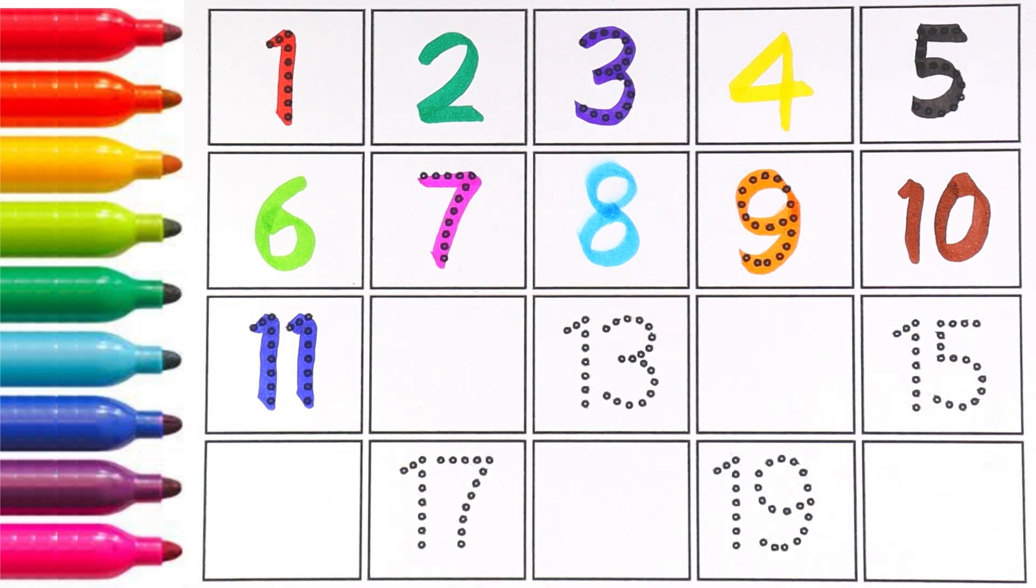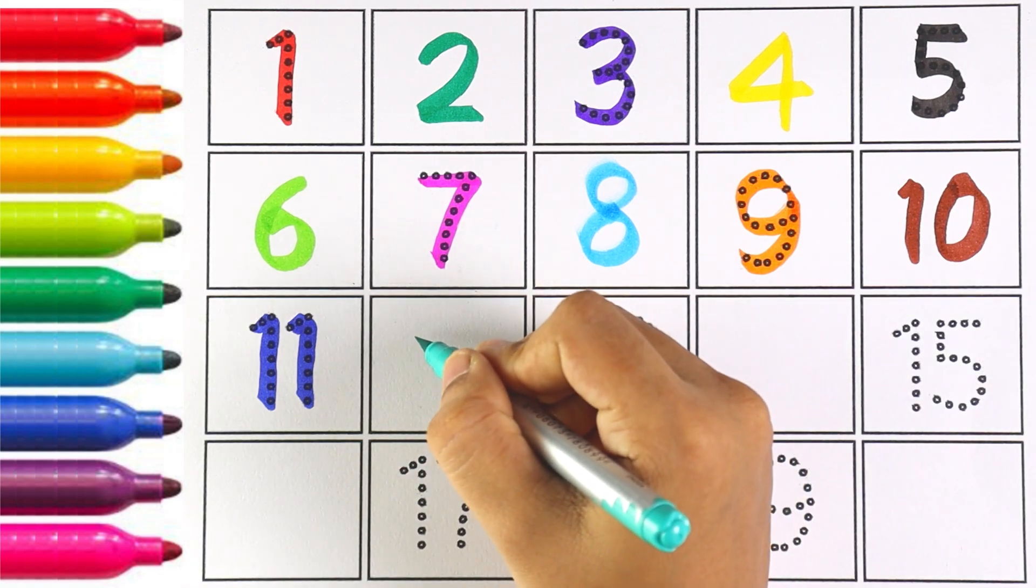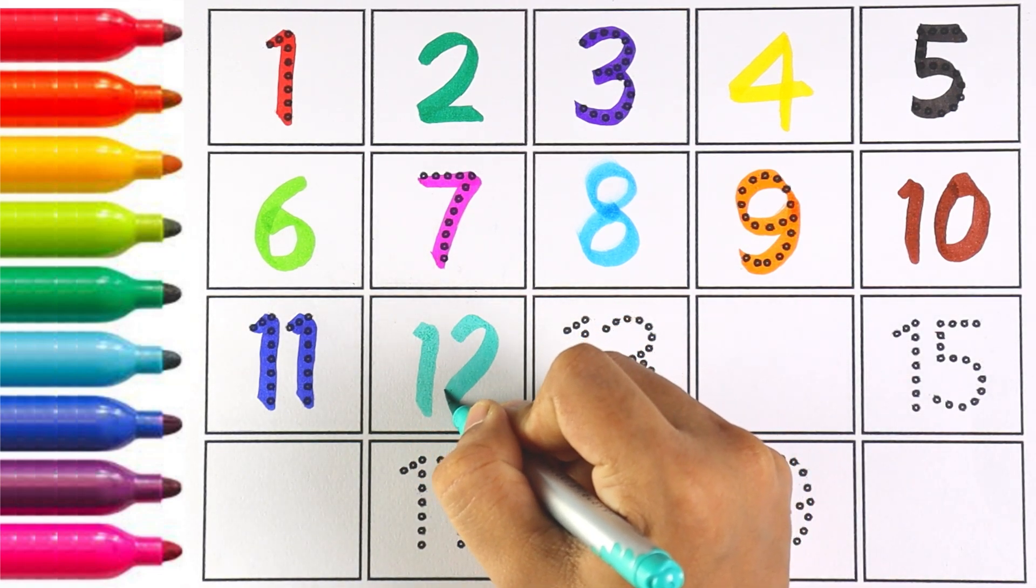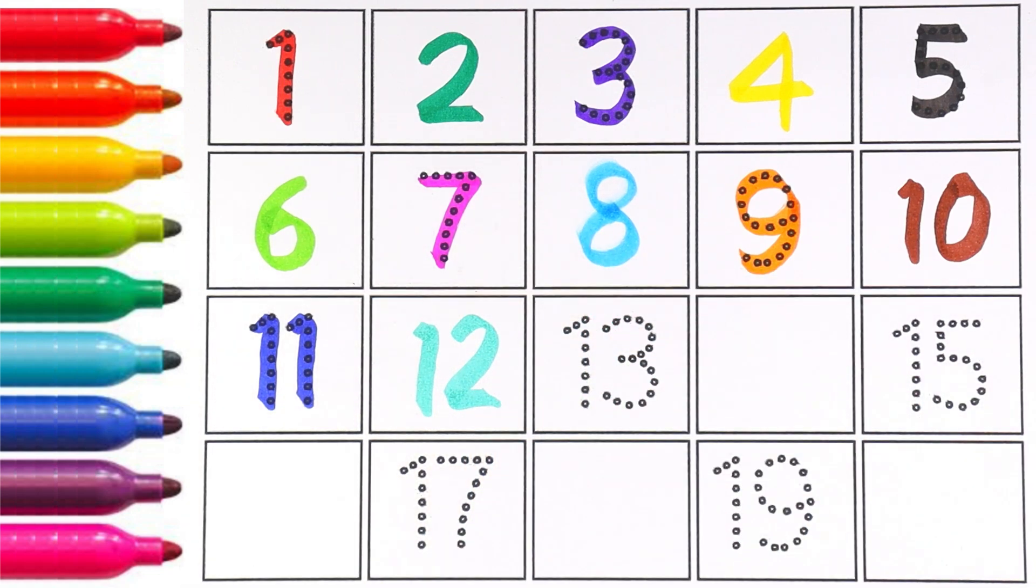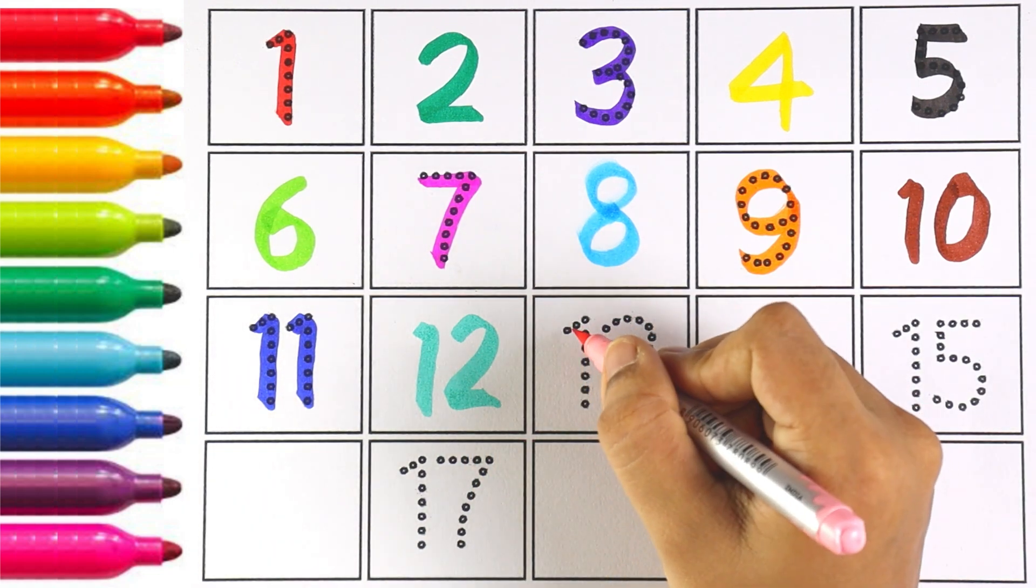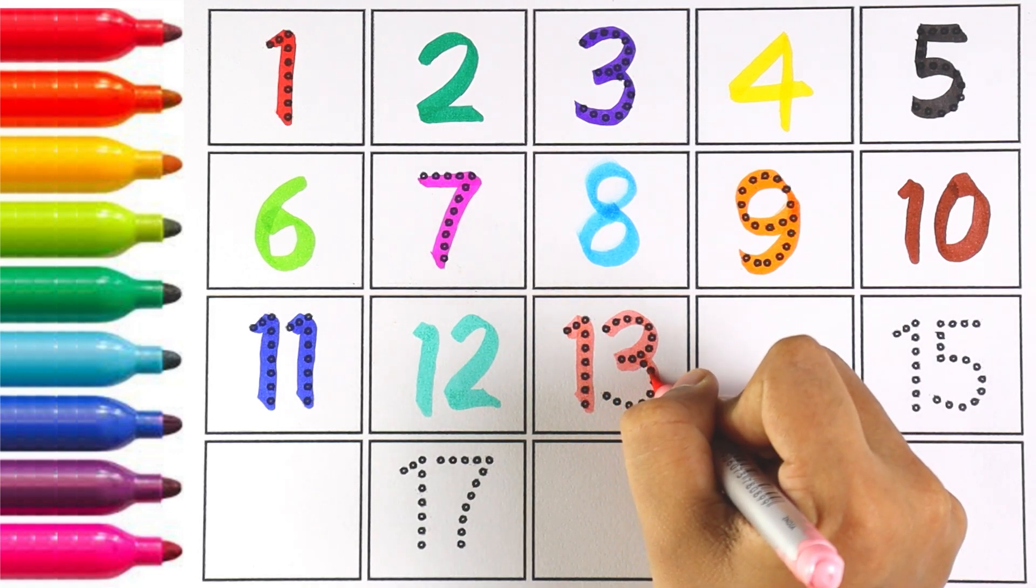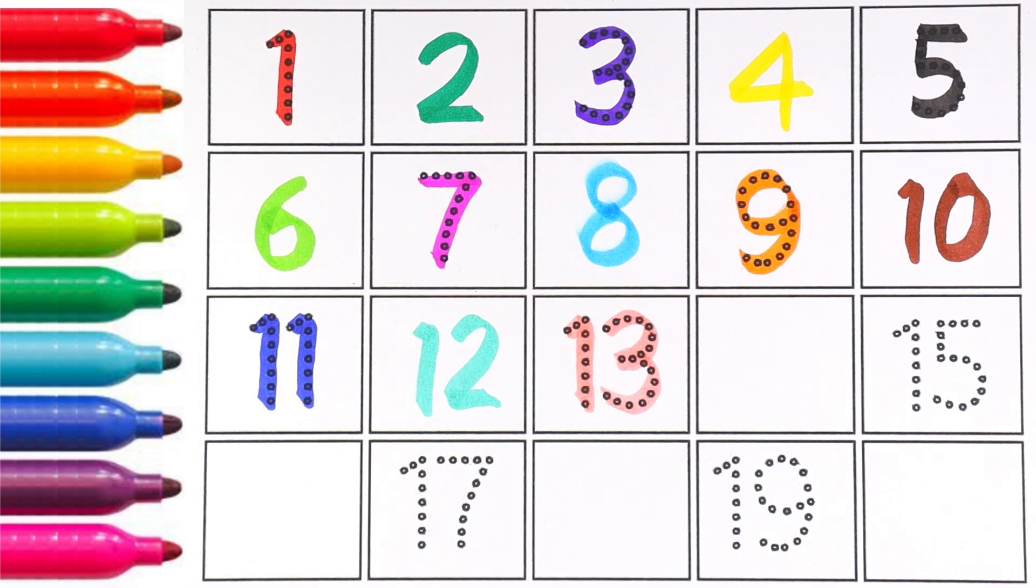Number eleven. Number twelve. Which number is this kids? That's right, number twelve. Now I'm writing number thirteen. One and three makes the number thirteen. Number thirteen.